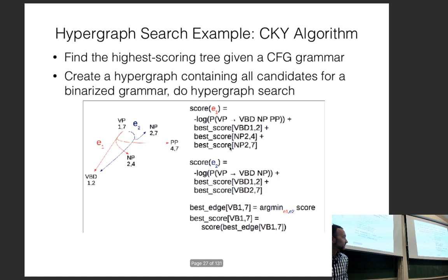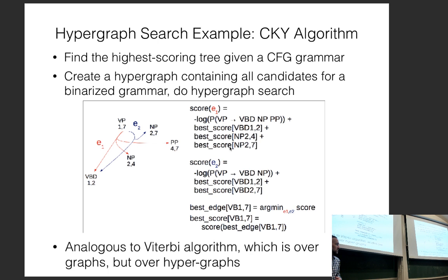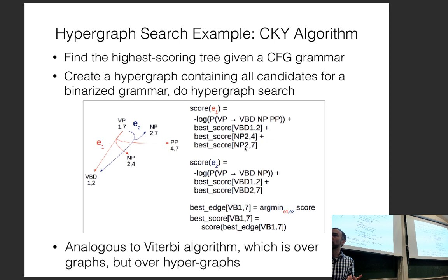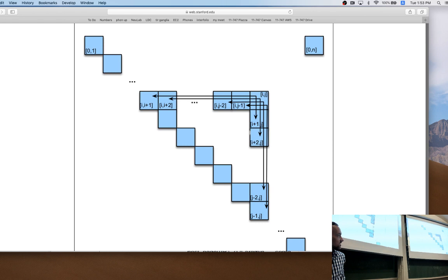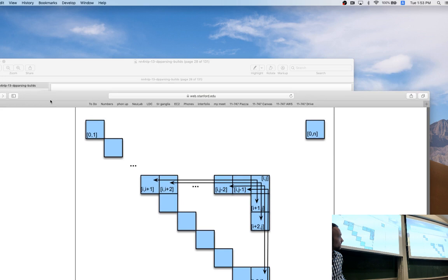This hypergraph search over a CKY chart is analogous to the Viterbi algorithm over graphs, but applied to hypergraphs. This is actually called the CKY+ algorithm. Essentially, CKY+ reframes CKY not as a static single chart but as a method applicable to any hypergraph.